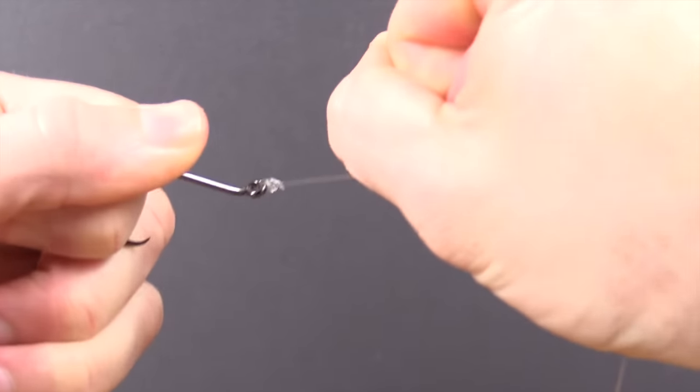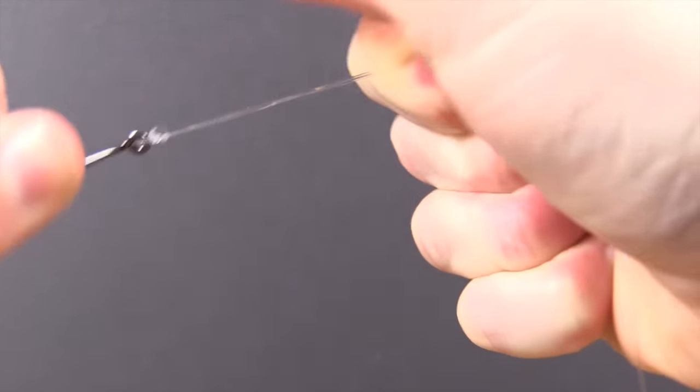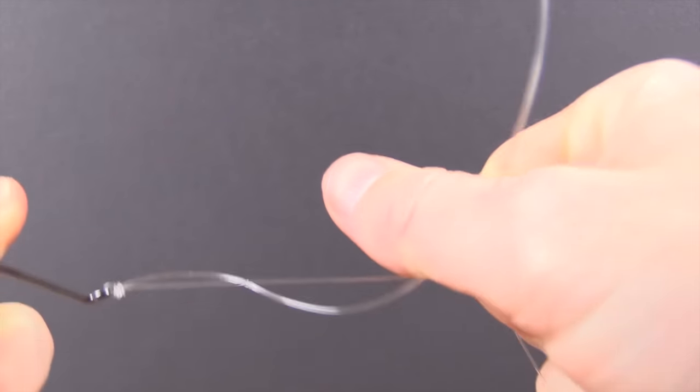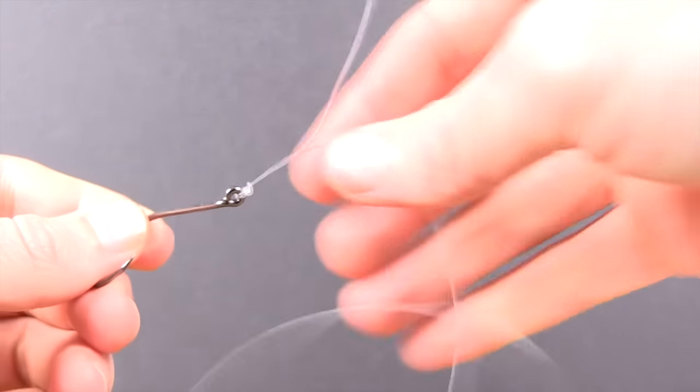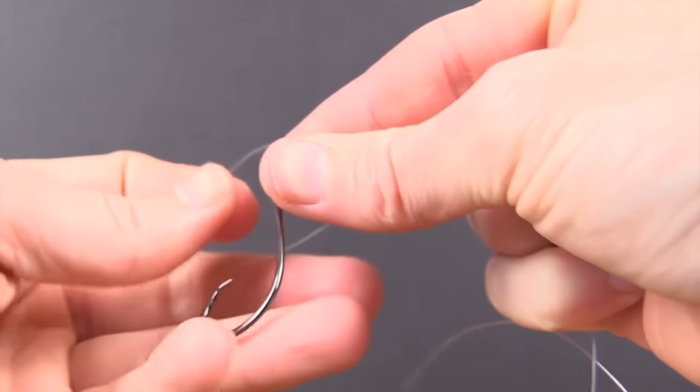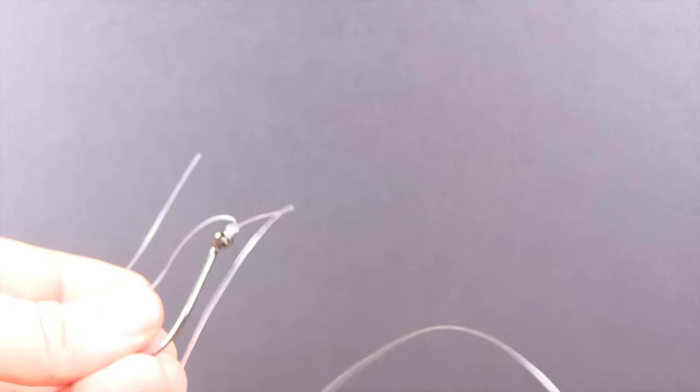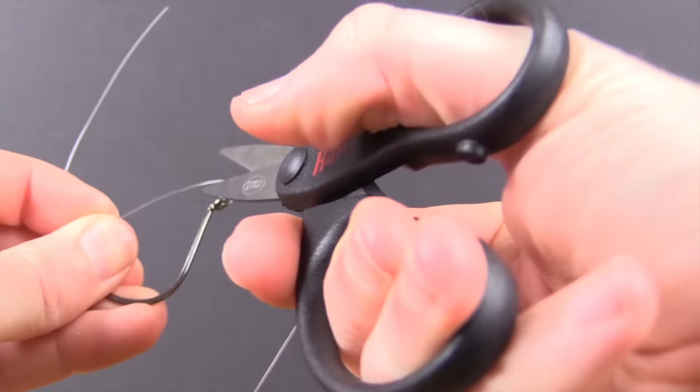This last part, just go ahead and tighten it down and you'll see this is a nice small knot that is extremely strong. That's it. The final step is to trim off the tag end. That is really all you have to do. That is the Palomar knot.